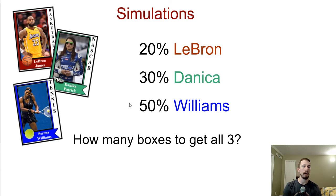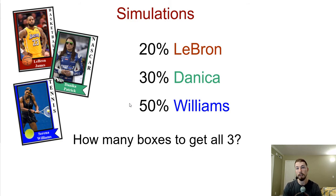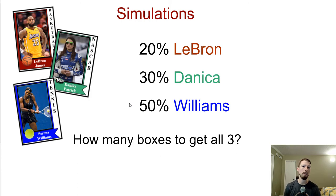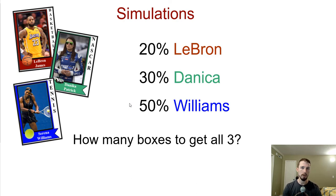The hope is that people would go out and buy more cereal than they would typically buy in order to collect all the playing cards. We could go out as a class and buy 100 boxes of cereal, open them up one at a time, and figure out how many it took to collect all three. But that's wasteful and expensive, so we can use random numbers to run a simulation instead to answer how many boxes it would take.